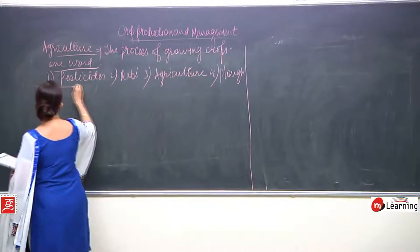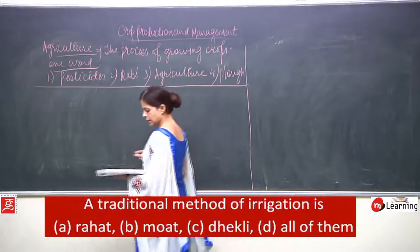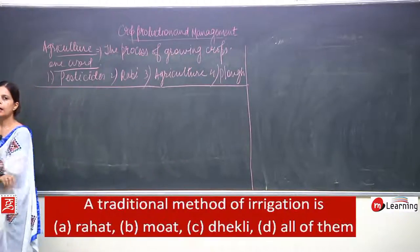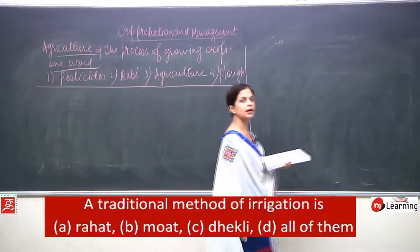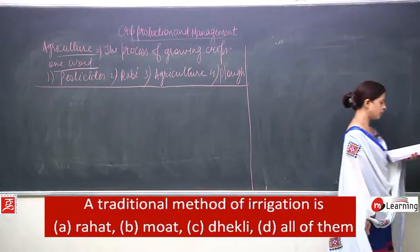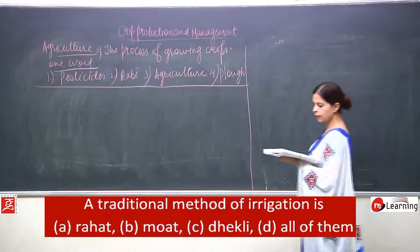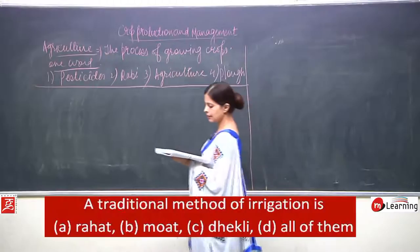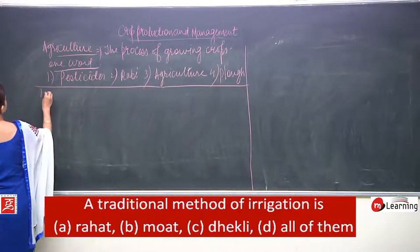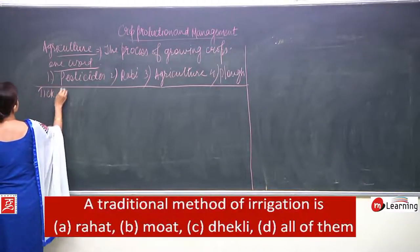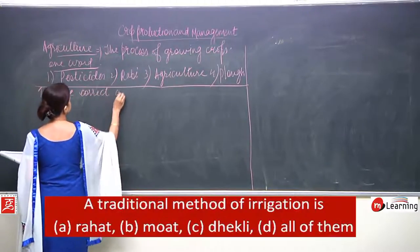Now pick the correct answer. A traditional method of irrigation — is it A: Rahat, B: Mote, C: Dekli, or D: all of them? It is D — all of them.